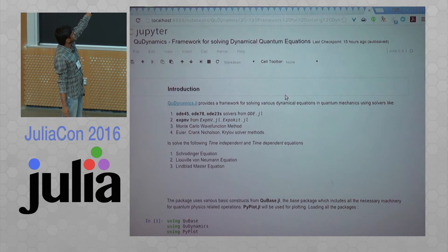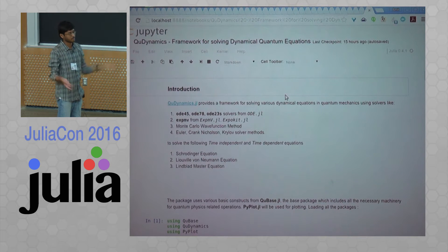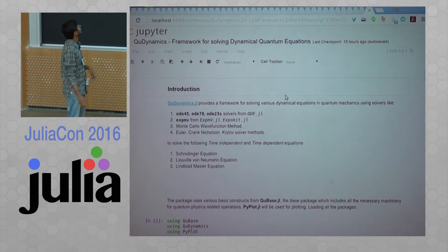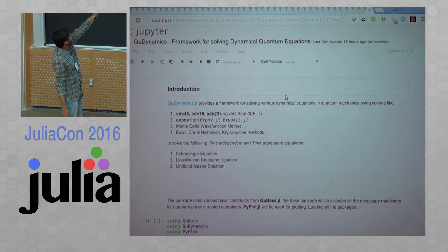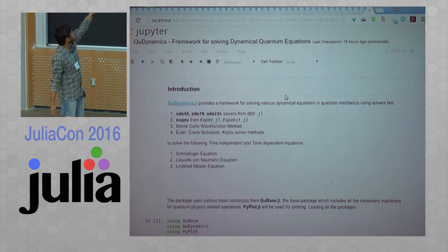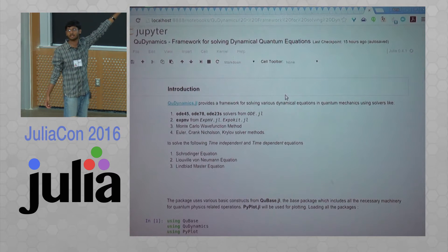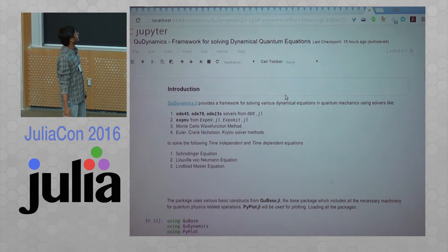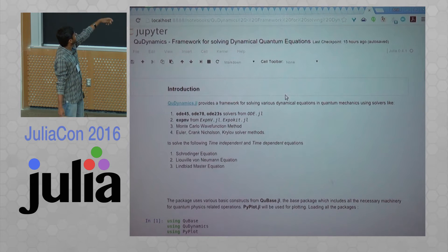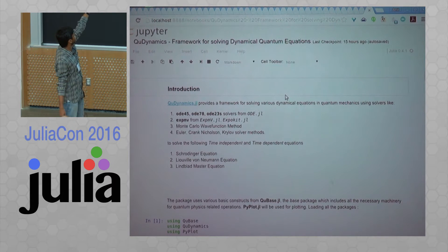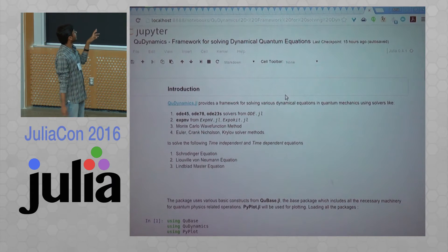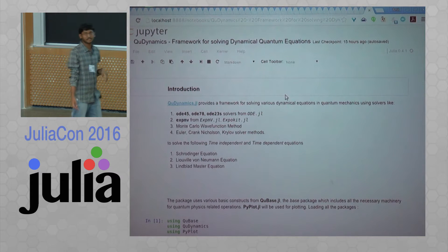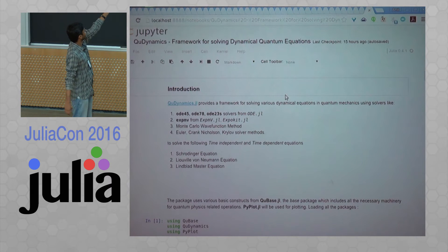Basically, this expmv is a solver which actually takes the exponential of a matrix and multiplies it with a column vector. We wanted to do a benchmark on expmv and expokit. As of now, we have the same solver from both packages. And then we have a Monte Carlo wave function method, the MCWF, and we have written the Euler Crank-Nicholson and the Krylov solver methods. This is for solving time-dependent and time-independent equations of Schrodinger equation, von Neumann equation, and Lindblad master equation.